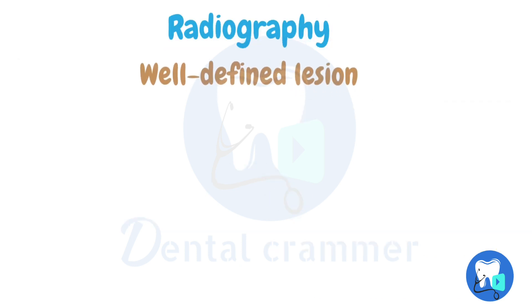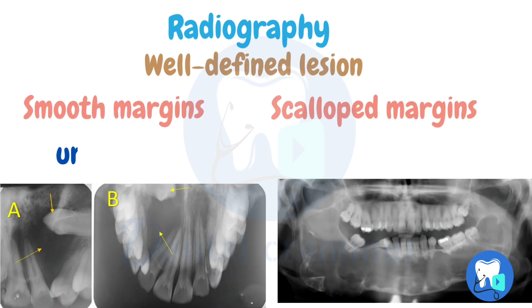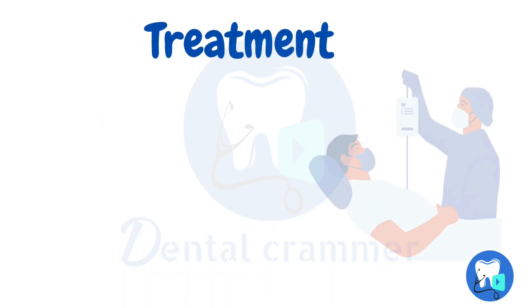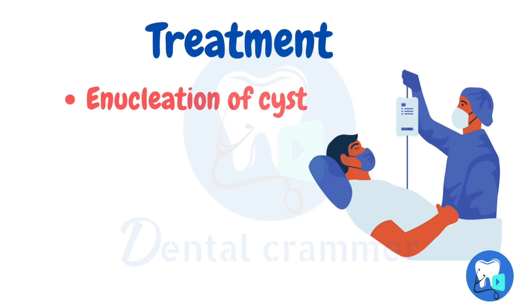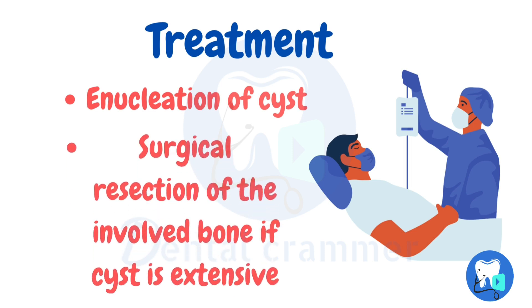In radiograph, OKC appears as a well-defined lesion with either smooth or scalloped margins. It might be a unilocular or multilocular lesion. When it comes to treatment, enucleation of the cyst is the best option. Surgical resection of the involved bone might be necessary if the cyst is extensive.